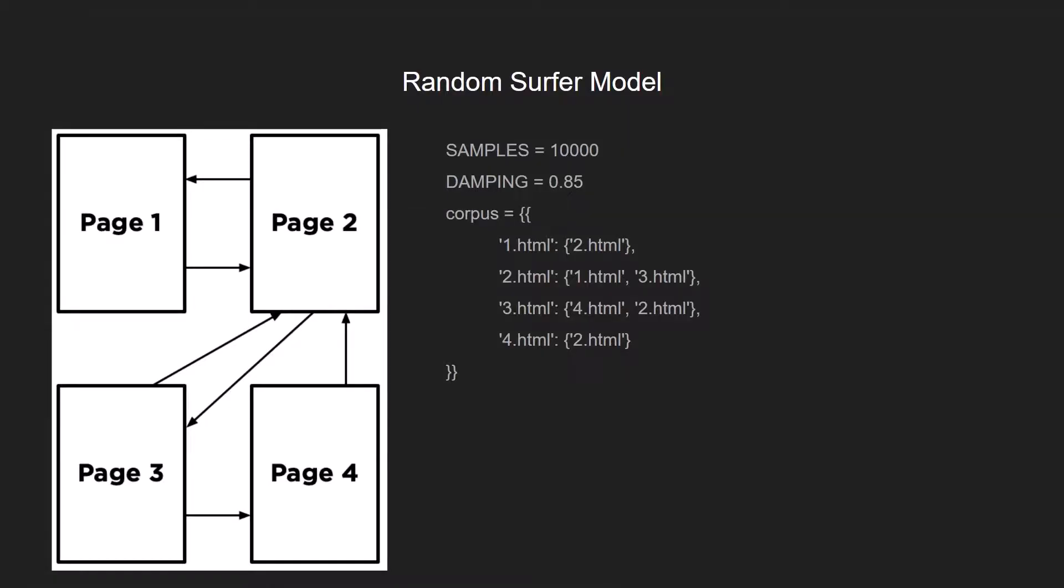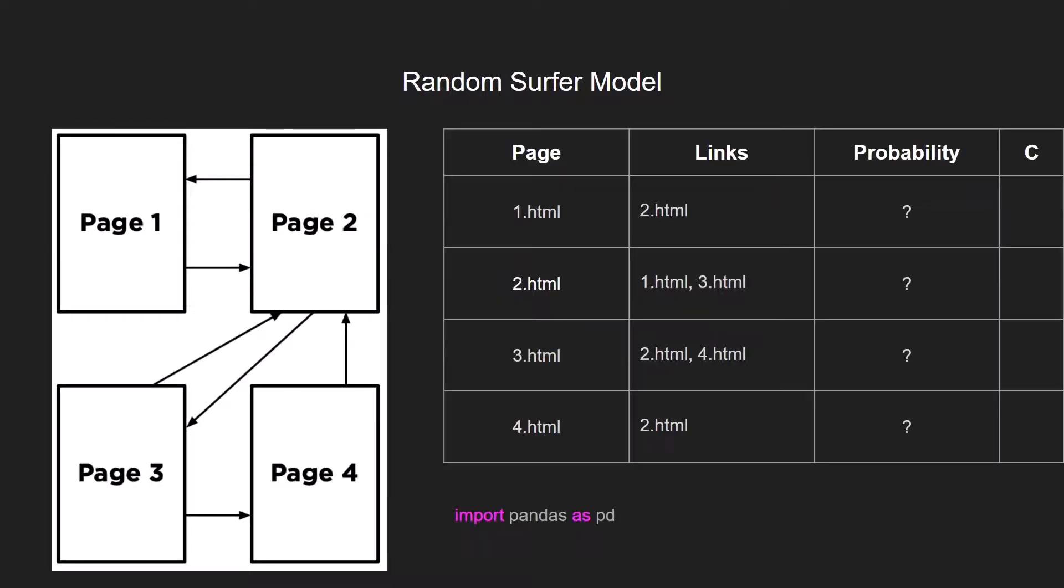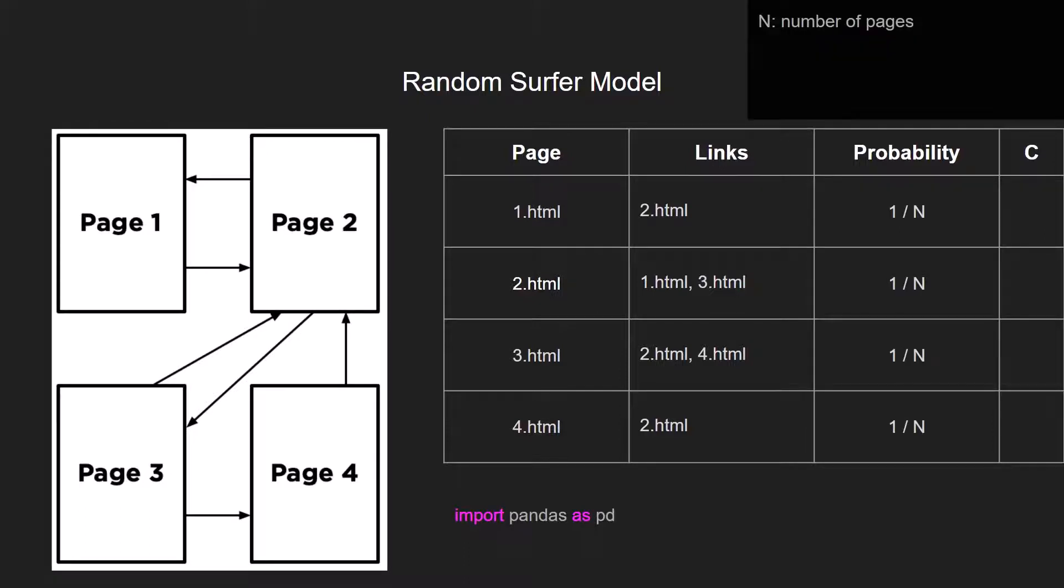So let's go to the random surfer model. We have 10,000 samples, we have a damping factor, we have also a corpus. And to simplify the visualization of the corpus, I decided to implement pandas data frames. So we have a table with the page, links, and the probability of being in that web page. So let's start assuming that all the pages have the same probability.